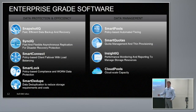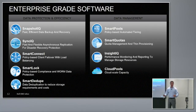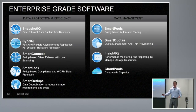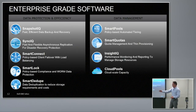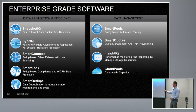SyncIQ is our replication capability that allows you to take directories on one cluster and replicate them to another location. You can do that for two purposes: disaster recovery, where if a cluster goes down you can recover it at a remote site, or simple backup. Backing up petabytes to tape might take a very long time, so you might use a second cluster at a remote location and use snapshots and SyncIQ to provide backup capabilities.